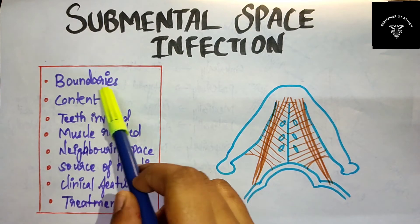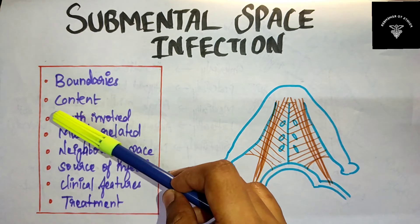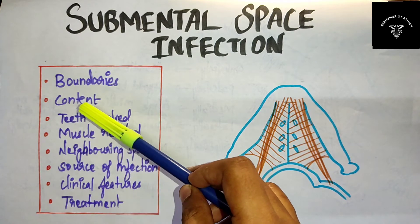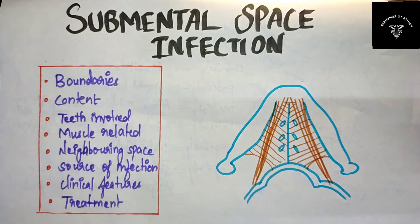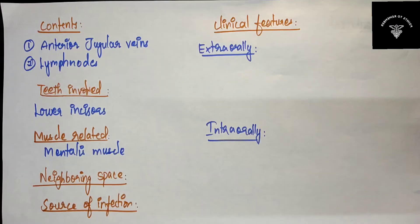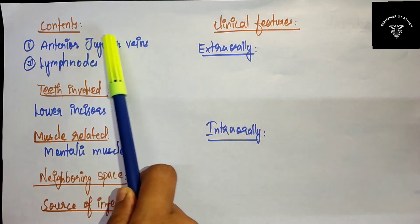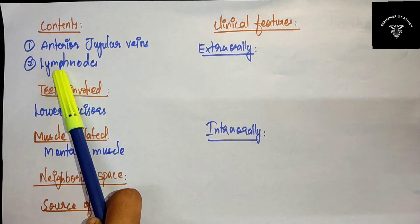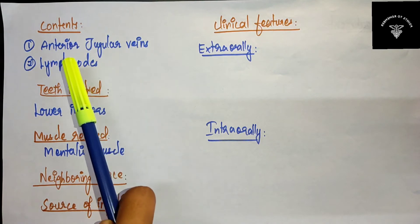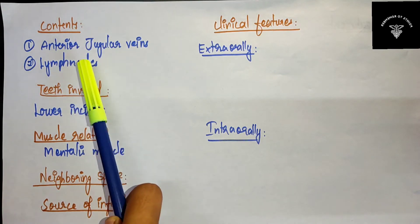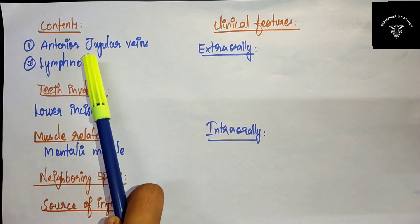The next heading is the contents of the submental space. The contents include the anterior jugular veins and lymph nodes. These two are the important contents present in the submental space.